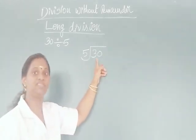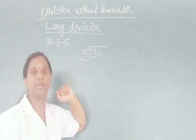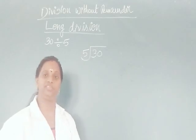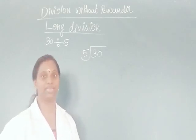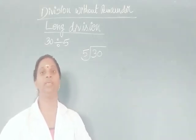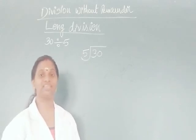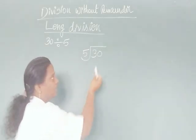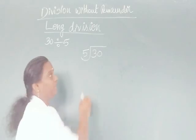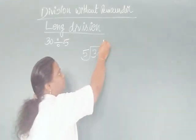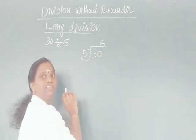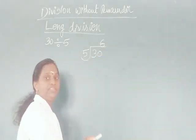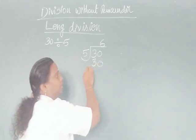Is 3 divisible by 5? No, 3 is not divisible by 5. So take 30 together. Check whether 30 is divisible by 5. Yes, 30 is divisible by 5. How many 5s are 30? 6 fives are 30. Write 6 just above the 0. Then multiply 6 into 5. 6 times 5 equals 30. Write this 30 below.